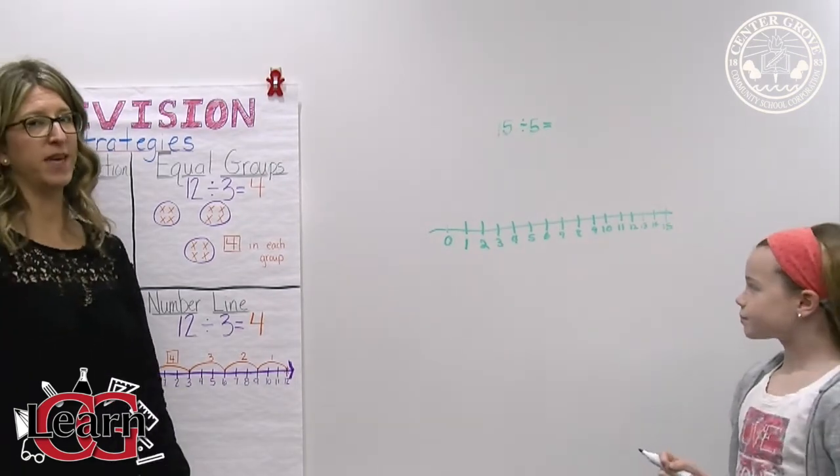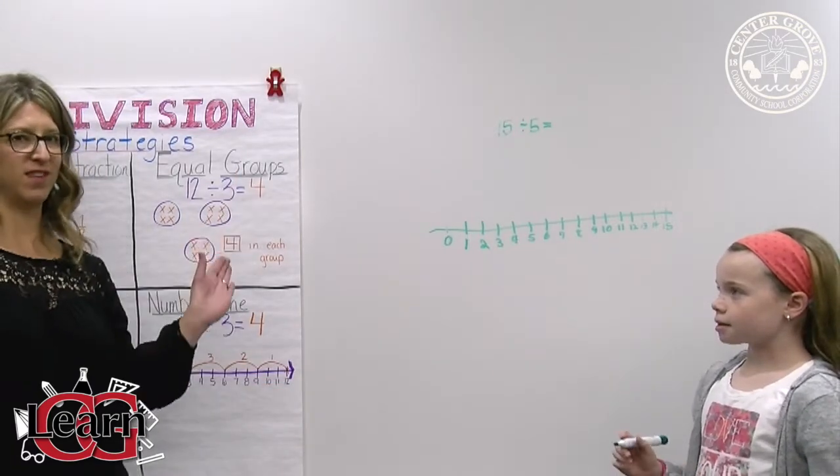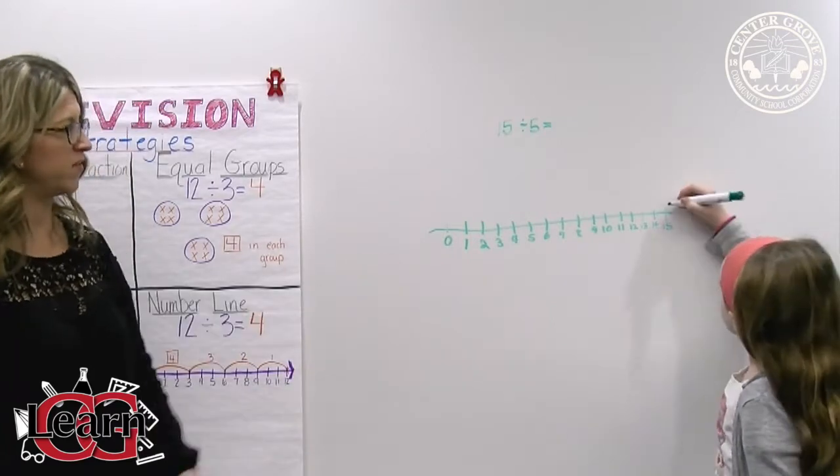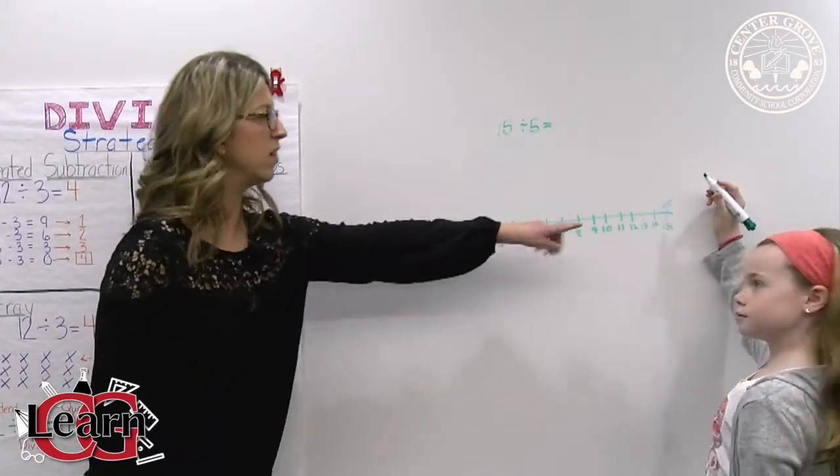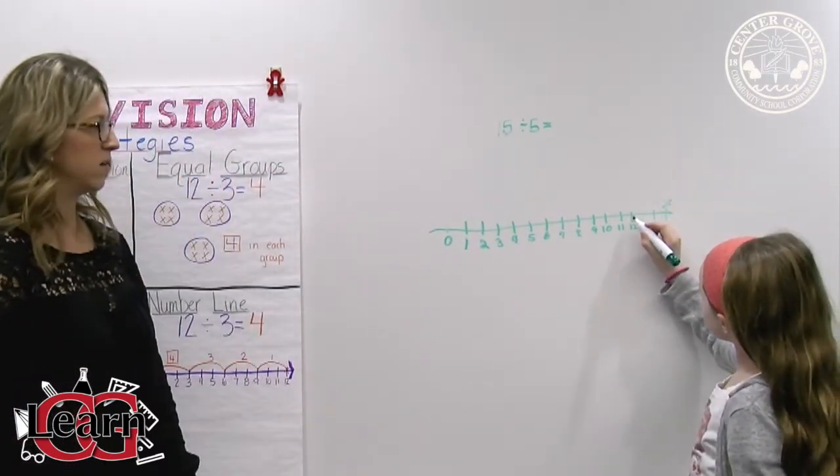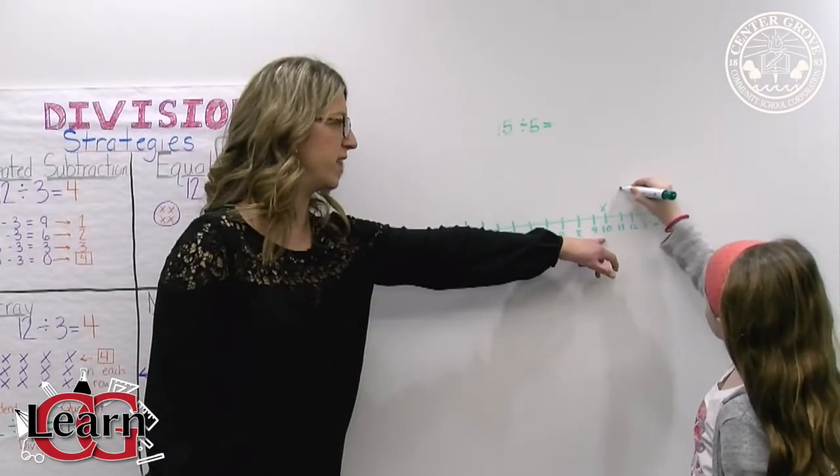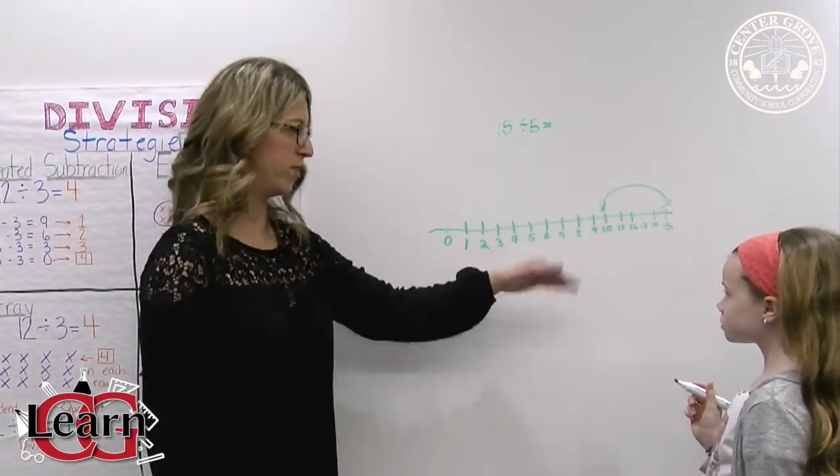Okay, and just like with repeated subtraction, she's going to repeatedly count backwards until we get to 0. So we're going to start at 15. And since we're dividing by 5, we're going to count 5 places on the number line. So she counted 5 places and she knows she's stopping at the 10 and she's connecting, making a little hump.